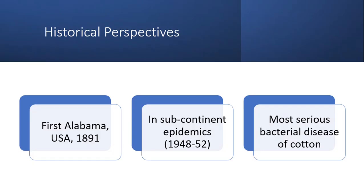Regarding the historical perspective, this disease was first discovered in 1891. In the subcontinent, it occurred in epidemic form from 1948 to 1952. This is considered the most serious bacterial disease of cotton.